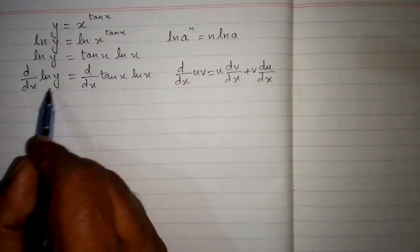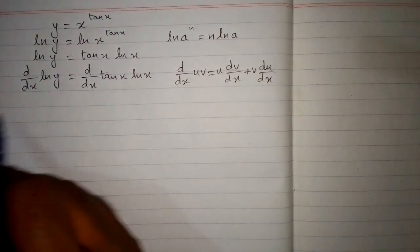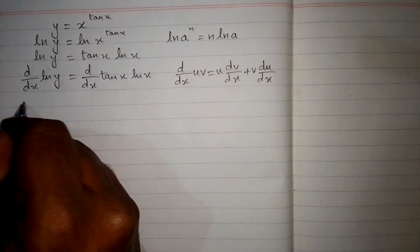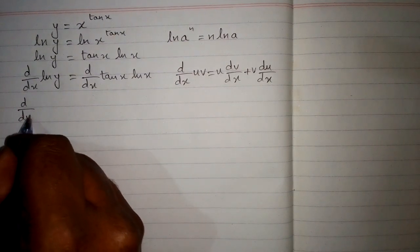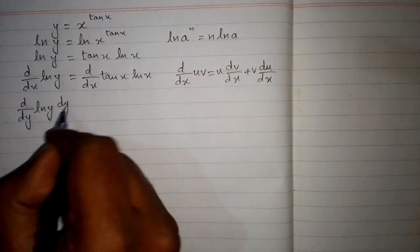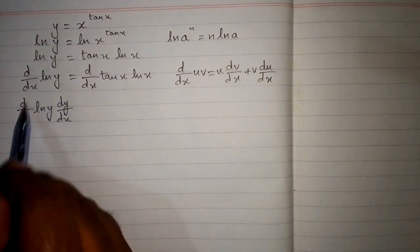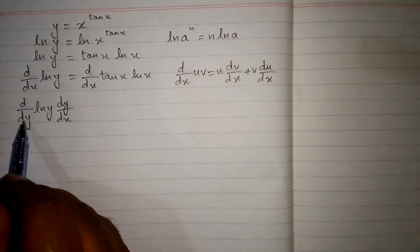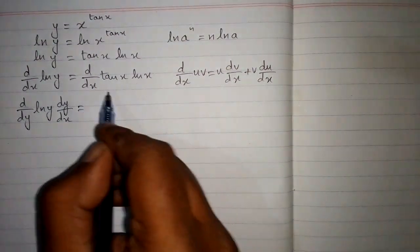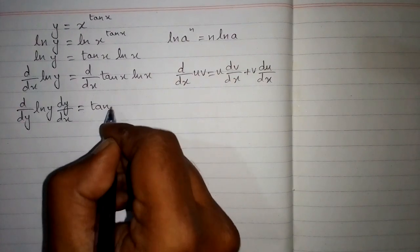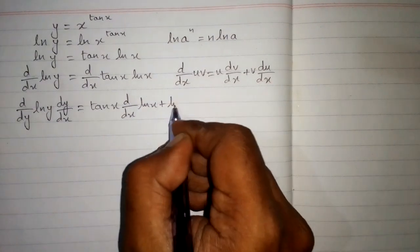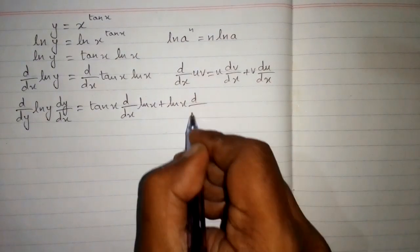On this side of equation we cannot differentiate ln y with respect to x, so we will apply chain rule. We will write d by dy of ln y then dy by dx. Now we can differentiate ln y because we have dy as a differential. Here we will apply the product rule, so we have 10x multiplied by the derivative of ln x plus ln x multiplied by the derivative of 10x.